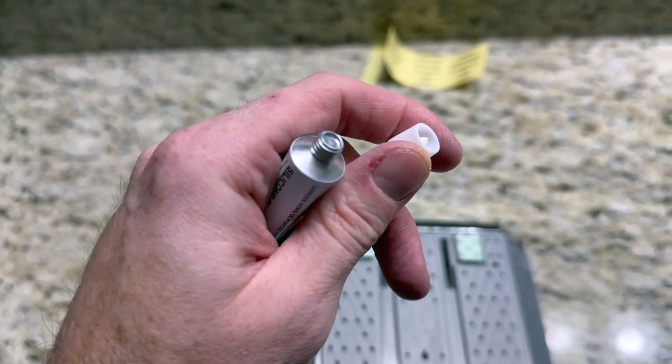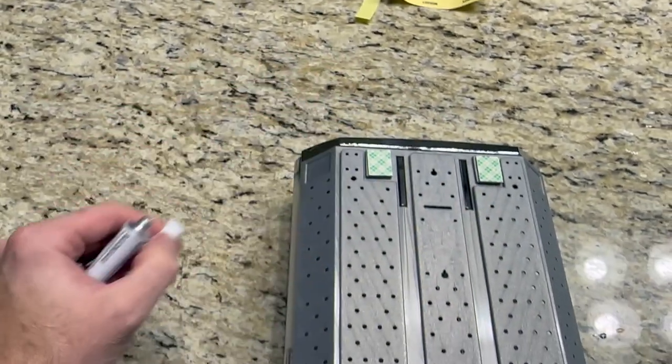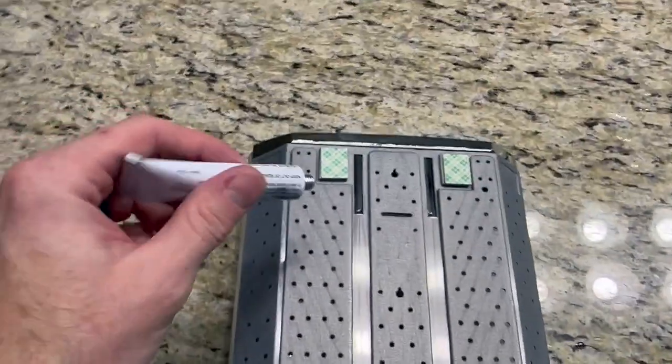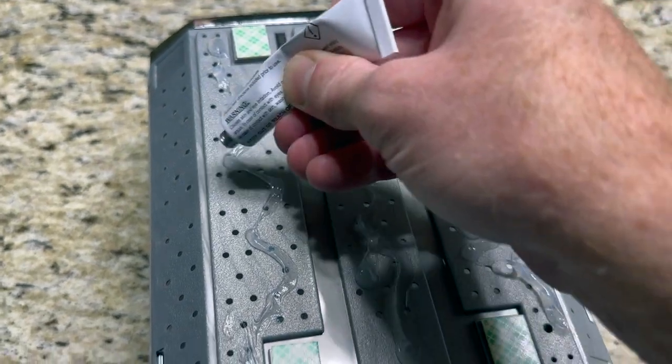Then we're just going to spread the glue in these sections with the holes. So I've gone ahead and I've squeezed out the silicone. I've gone in an S pattern, which I like to do when using adhesives.